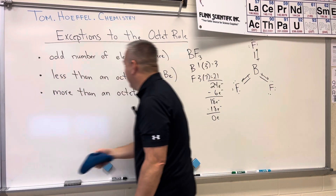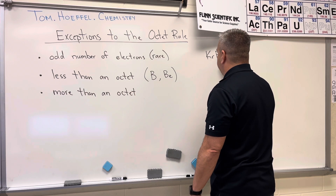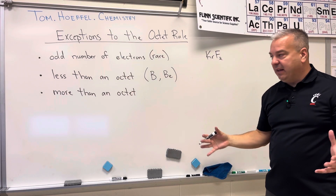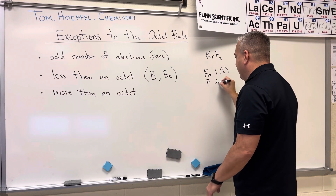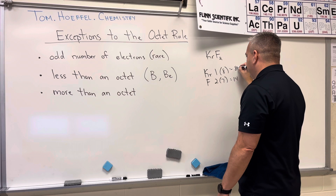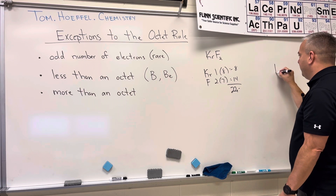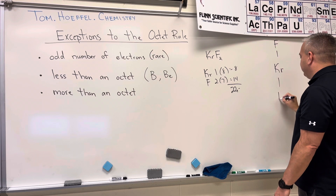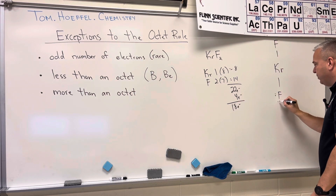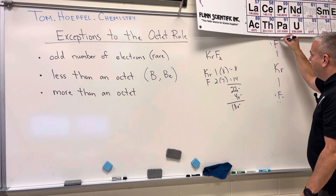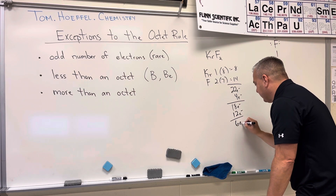Now let's move on to more than an octet, with an example like KrF₂. Let's do the bonding and see if it can have more than an octet. Krypton has eight valence electrons, fluorine has seven, so that comes out to 22 electrons total. We form two bonds to fluorine — those bonds cost us four electrons, leaving 18 electrons. Placing six electrons on each fluorine (plus the bond) gets each fluorine up to eight. That uses 12 electrons, leaving six electrons remaining.